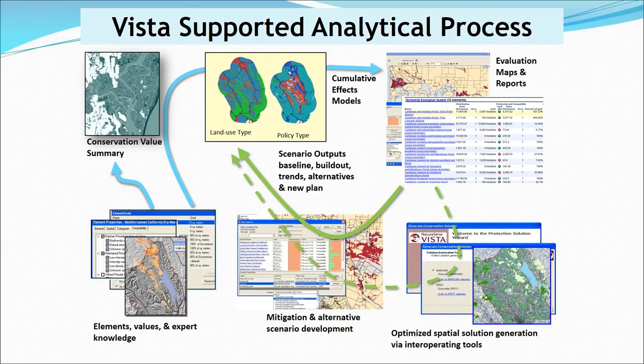We also offer a wizard that helps run Marxan. Once you've built your Vista database, you have pretty much all the data needed to run Marxan. Vista will package all that up, ask questions for things like boundary length modifiers, run Marxan, and then you can import the results back into Vista. You can assess the Marxan result as a scenario to identify more issues using the explicit ecological model in Vista, then do more refined spatial design on that Marxan result and specify implementation mechanisms.